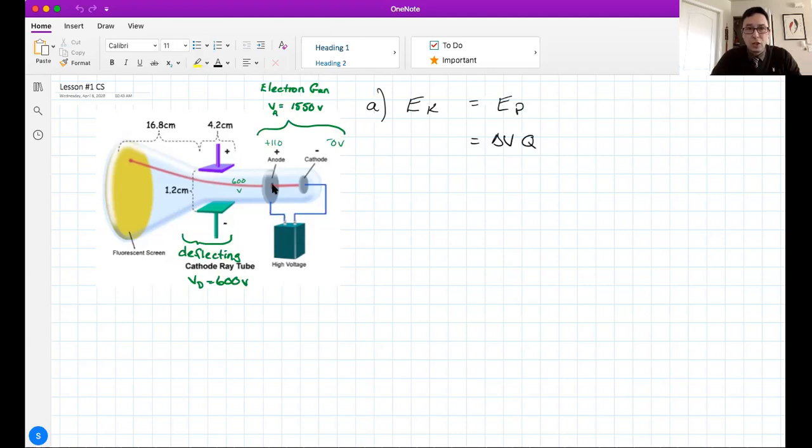It's delta V because it's the change in voltage between the two positions. You can see over here that it goes from negative 450 to positive 1100, and that creates a difference of 1550. We call that accelerating voltage.